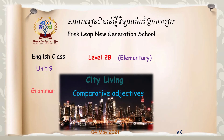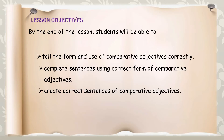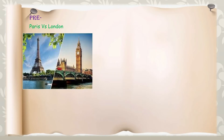Good afternoon everyone, welcome back to our English video in the Words to Be Elementary book. Today we're going to start new lessons talking about city living. We focus on the grammar lesson: comparative adjectives. By the end of the lesson, you will be able to: first, tell the forms and use comparative adjectives correctly; second, complete sentences using correct forms of comparative adjectives; and third, create correct sentences using comparative adjectives.